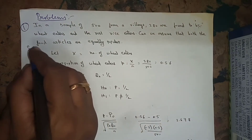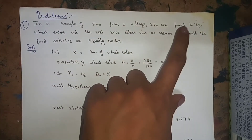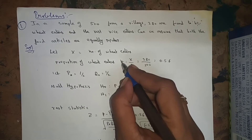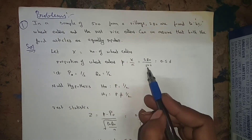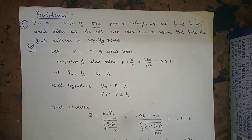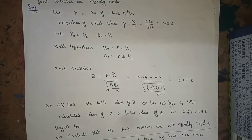Let x = 280 (number of wheat eaters). The sample proportion is p = x/n = 280/500 = 0.56. Since both food articles are assumed equally popular, p₀ = 1/2 = 0.5 and q₀ = 1 − 0.5 = 0.5.